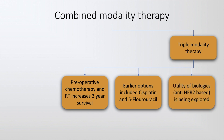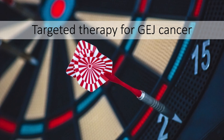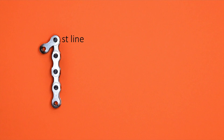In recent advances, the utility of biologics — that is, anti-HER2, which is Human Epidermal Growth Factor Receptor 2-based therapies — are now being explored. In recent times, targeted therapy for gastroesophageal junction tumors has become popular.